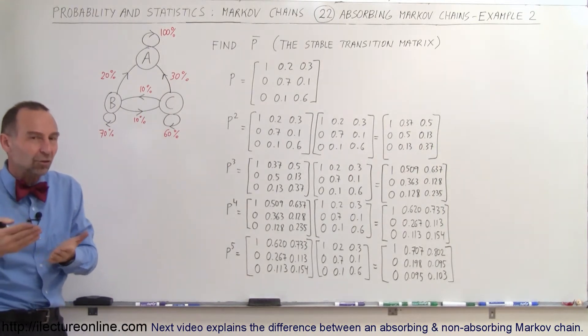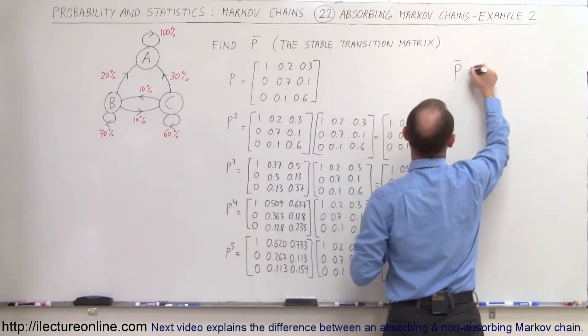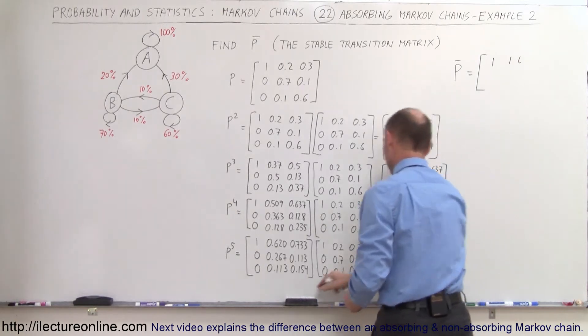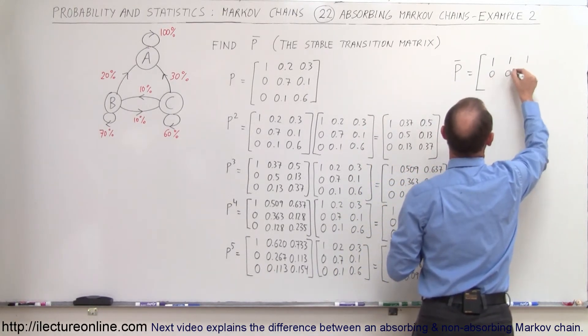Eventually, a stable transition matrix should look like this, with ones at the top—the top should be a one and zeros everywhere else.